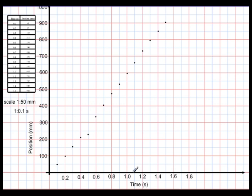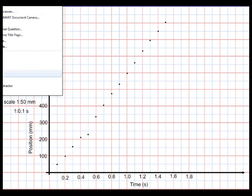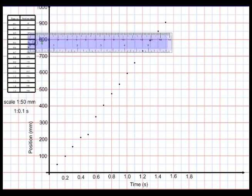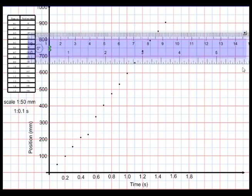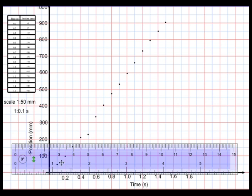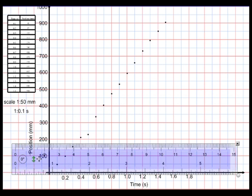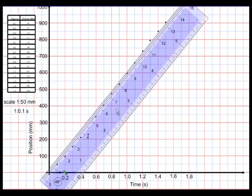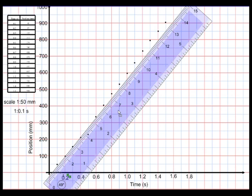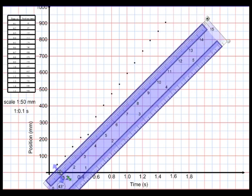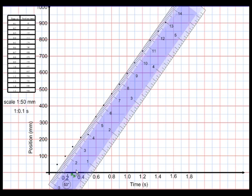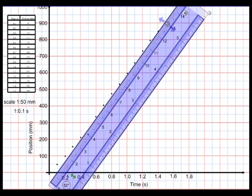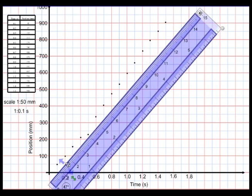Then we need to make a best fit line. So we need to pull out a ruler, and when making a best fit line, you do not connect the dots in a straight line, one to the next. What you try and do is line up your ruler so that it comes as close to passing through as many of the dots as possible.